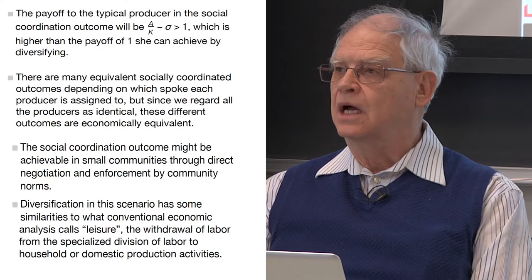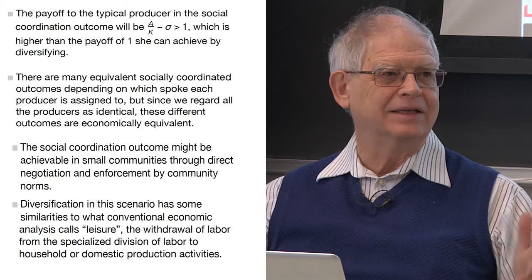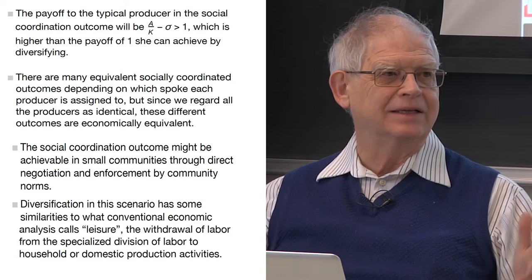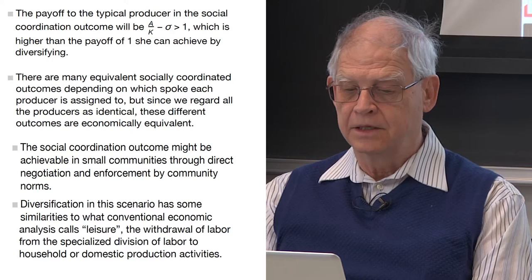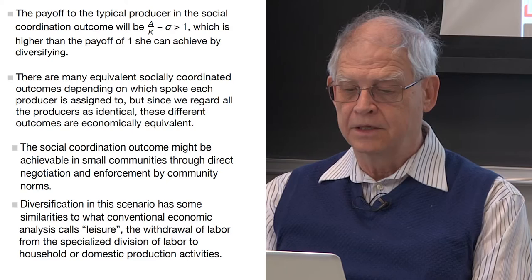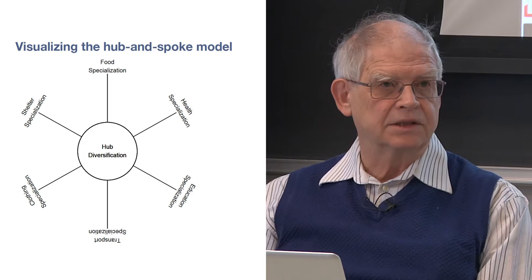We assume the number of producers is an even multiple of the number of products so that you can divide up effectively into the right number of teams. If you were doing more complicated math, you'd have to deal with remainders, but let's leave that aside. Here's a picture of the idea: the hub is diversification — the circle in the middle — and then the spokes are the different lines of specialization that a producer might choose.